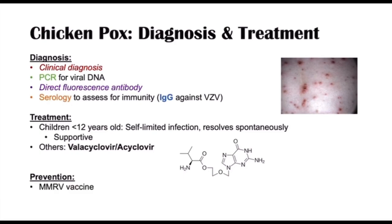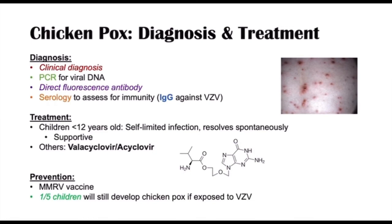The MMRV vaccine doesn't always protect all children from chickenpox, but it can reduce rates significantly. Usually about 20%, or one in five children, will still develop chickenpox if exposed to varicella zoster virus. Even if they do develop chickenpox, it is often a milder form of the condition — fewer lesions, shorter duration of illness, and fewer complications.